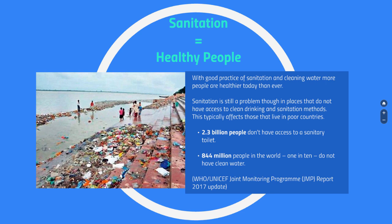This picture from India shows a river where people use the water for washing clothes, bathing, drinking — it is their main source of water for everything. They don't have good sanitation practices or access to treatment like we use here. 2.3 billion people still don't have access to a sanitary toilet, and 844 million people — one out of 10 in the world — still don't have access to clean water. They are drinking contaminated water full of pathogens and parasites that can make them very, very sick.